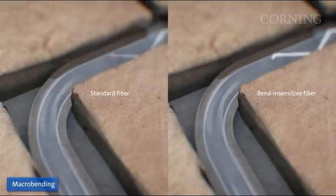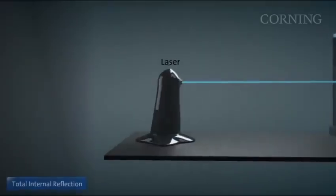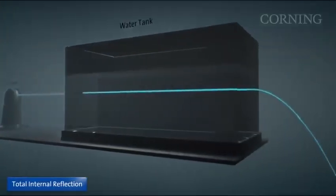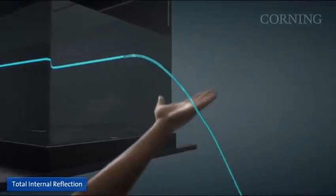Using a bend-insensitive fiber like Corning ClearCurve single-mode or multi-mode fiber will greatly reduce the loss caused by macro-bending. Optical fibers operate on the principle of total internal reflection, which keeps the light within the core and guides it down the length of the fiber.